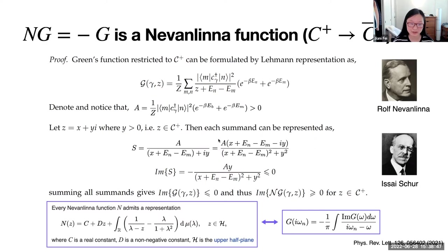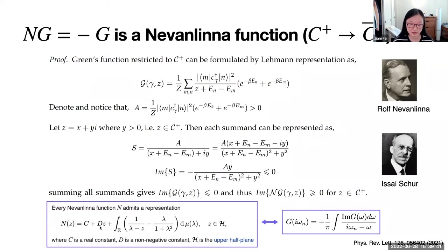For each Nevanlinna function, we know it admits a representation where c is a real constant, d is a non-negative constant, and mu(lambda) is a positive measure on the whole real line. Remarkably, this integral term recovers the Green's function structure with the familiar kernel. An additional term regulates that the measure decays fast enough so the integral gives a finite real value compensated by c. Setting d = 0 restores the Green's function kernel, confirming that the Green's function is a subspace of the Nevanlinna space.